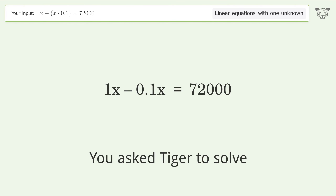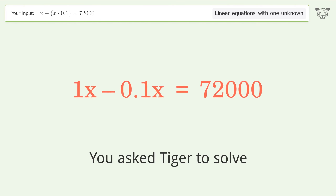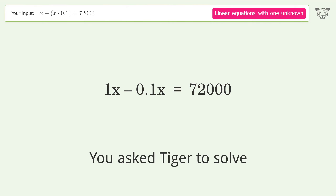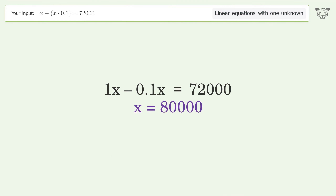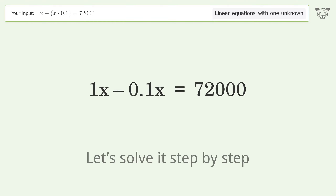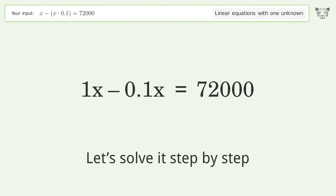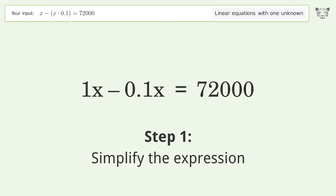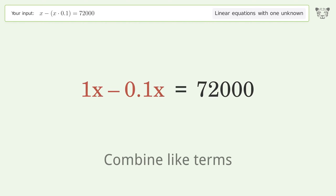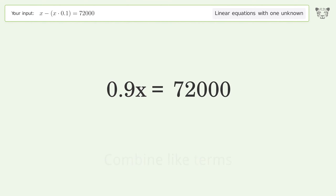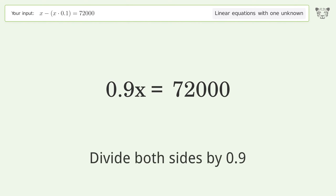Tiger is asked to solve a linear equation with one unknown. The final result is x equals 80,000. Let's solve it step by step: simplify the expression, combine like terms, isolate the x, and divide both sides by 0.9.